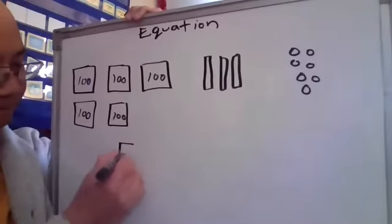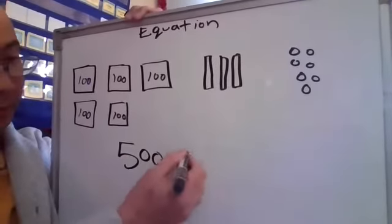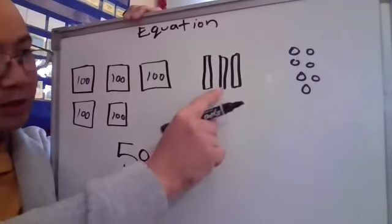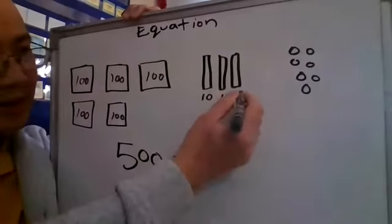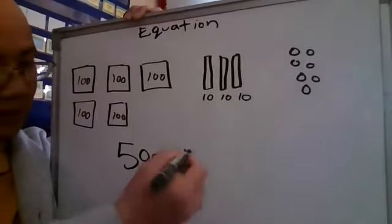That's 500 plus 1, 2, 3. And each of these are 10. So 10, 10, and 10. That's 30.